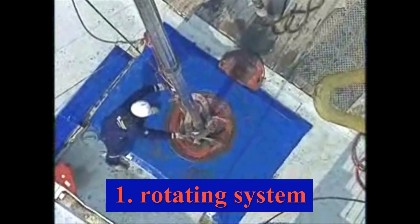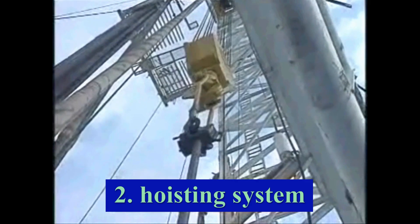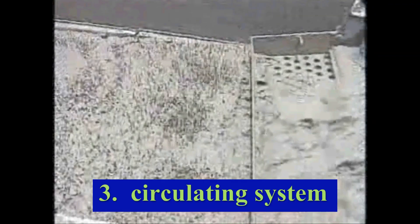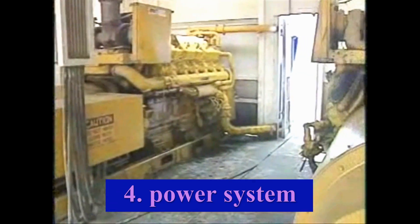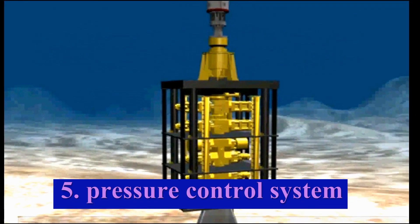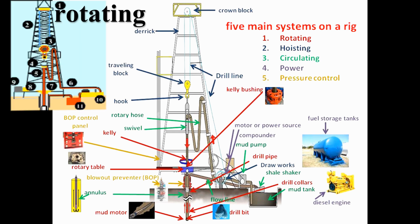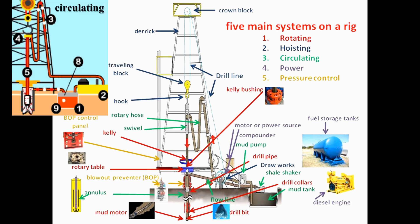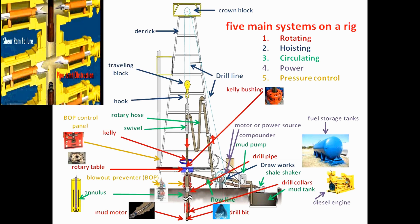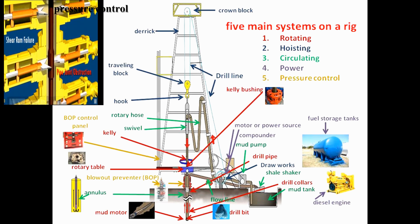Each rig consists of: 1) a rotating system, 2) a hoisting system, 3) a circulating system, 4) a power system, and 5) a pressure control system. In this drawing, I've labeled each of the five main systems with their significant components as you'd see on an operating rig. Let's take a few minutes to orient ourselves to their locations and look at how they fit all together. Once we are familiar with the parts and their locations, we'll describe their functions.